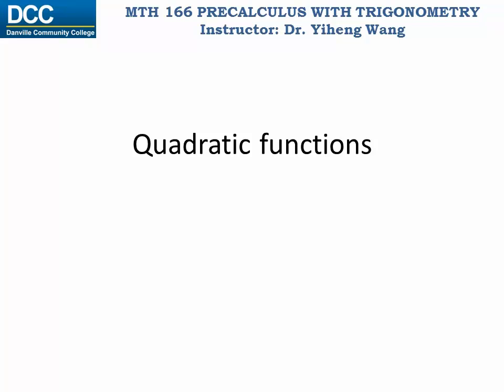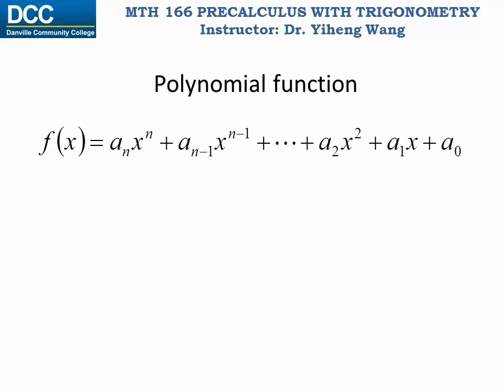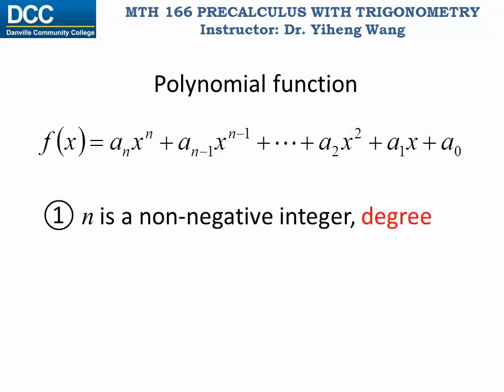With this video we begin the study of polynomial functions, but first let's focus on the second degree polynomial functions, normally known as the quadratic functions. Here is the definition of a polynomial function. As you can see, it is the sum of terms of x with descending powers. The last term is x to the zeroth power, which is a constant term. n here is known as the degree of the polynomial function — we will call it a function of nth degree. It must be a non-negative integer, for example 2, 5, or 17.